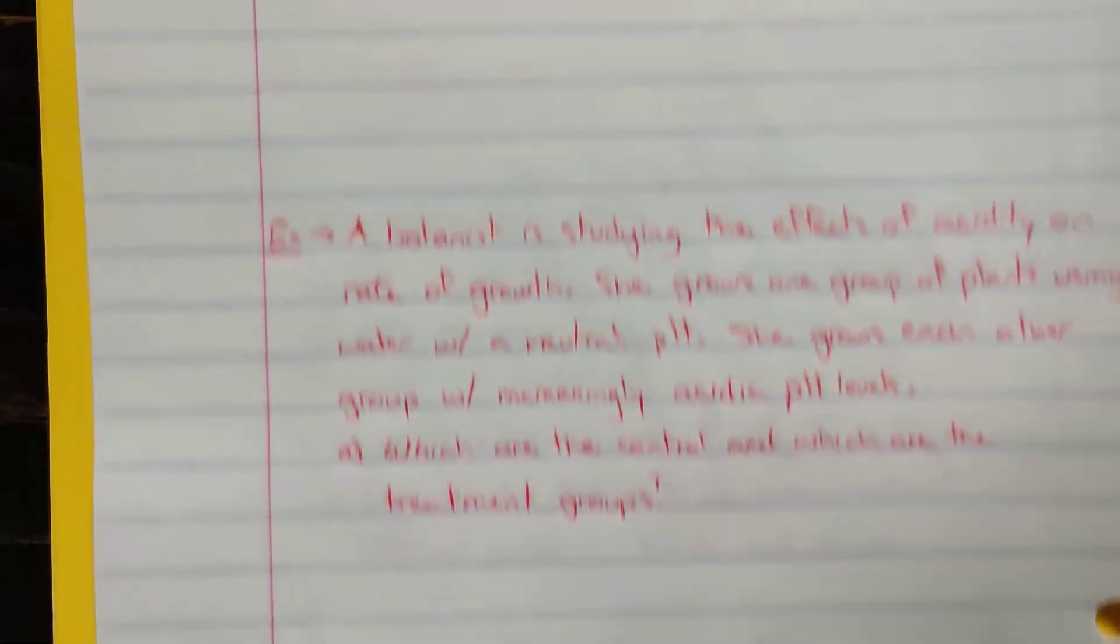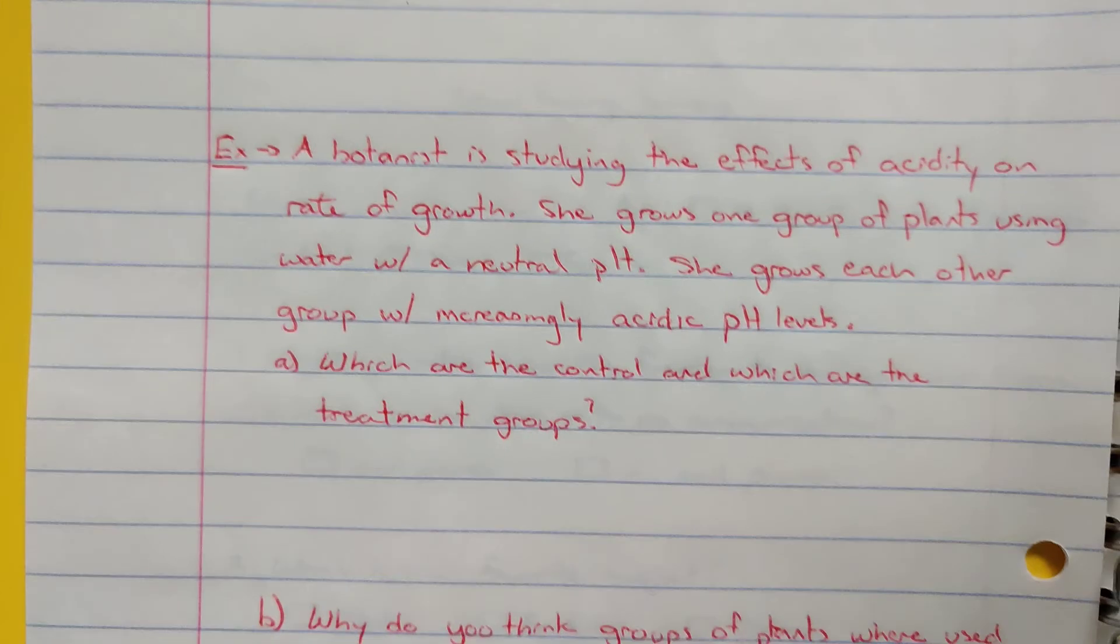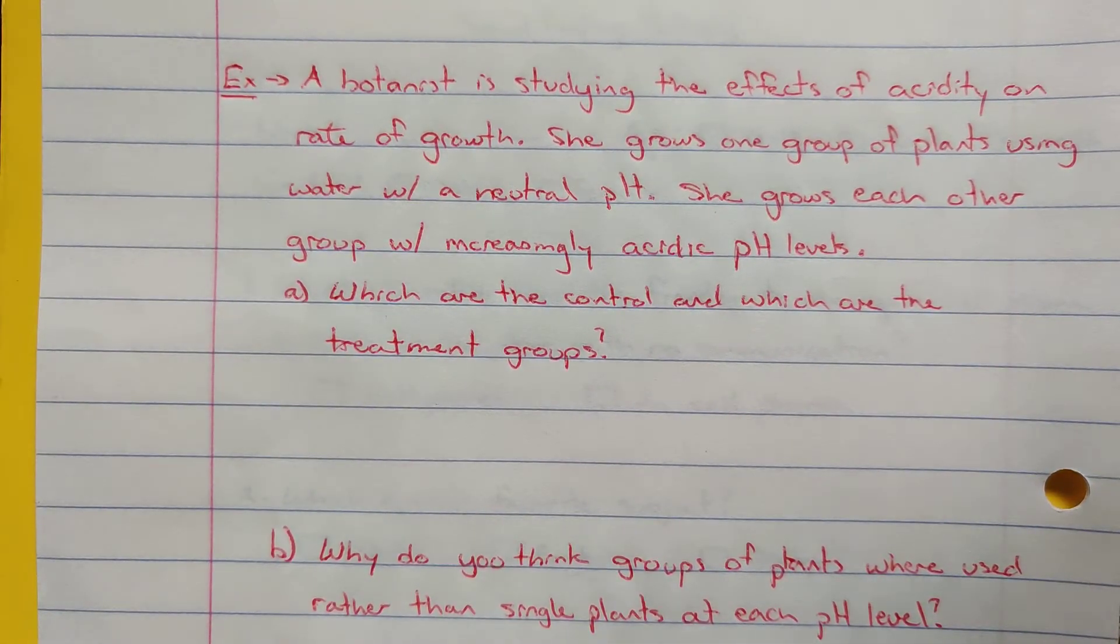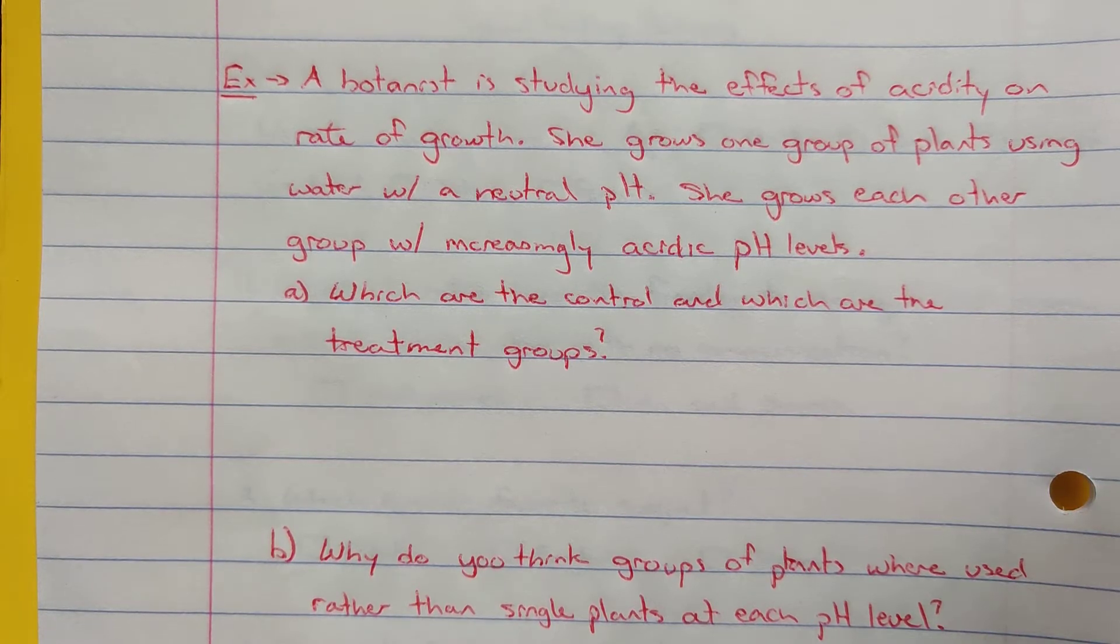In the next case here, we have a botanist studying the effects of acidity on the rate of growth. She grows one group of plants using water with a neutral pH, she grows each other group with increasingly acidic pH levels. So she has a group of plants with neutral pH and then she has several other acidic pH levels and groups of plants are each getting that. What are the control and what are the treatment groups?